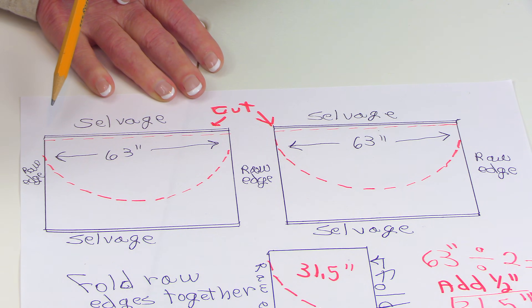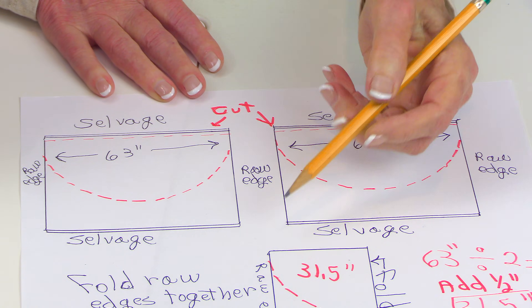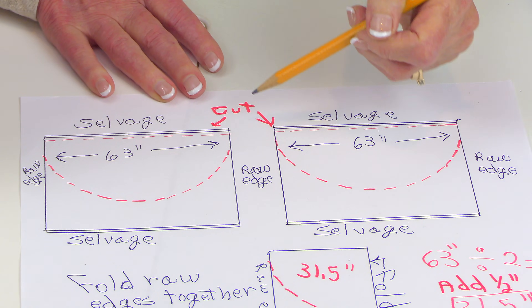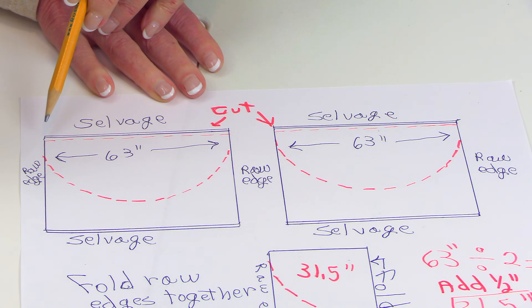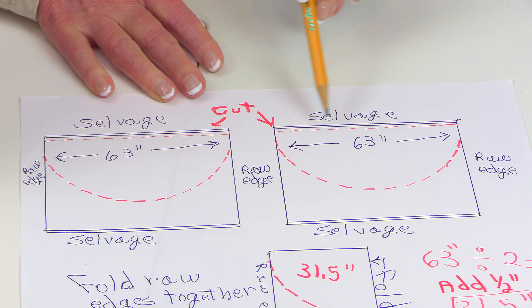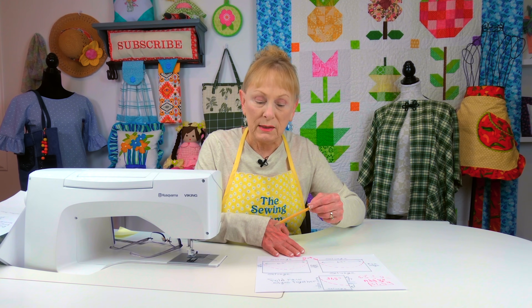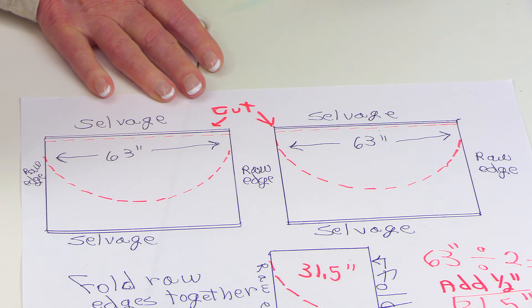So here it is. Let's say your tablecloth dimensions are 63 inches. You're going to buy double the amount and then cut your fabric in half from selvedge edge to selvedge edge. Cut one selvedge edge off on each piece. What you're going to create out of each piece is a giant half circle.